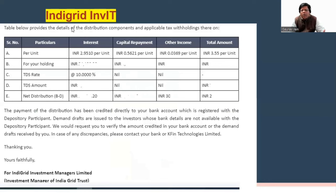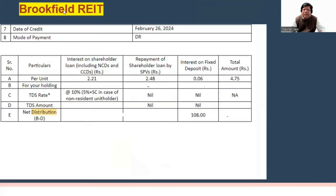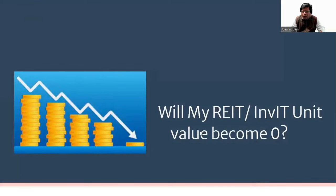If you've received a distribution advice from REITs and INVITs, it will look something like this — you'll have a capital repayment column showing the amount being paid to you as capital repayment. Similarly, a Brookfield REIT would show repayment of shareholder loan by SPV. So the question is: is my REIT and INVIT unit value going to become zero? That's what everybody has in mind.